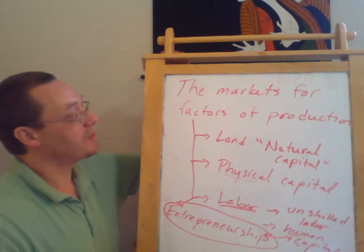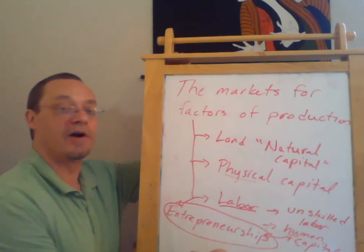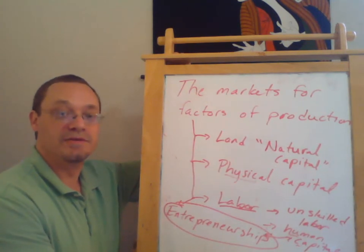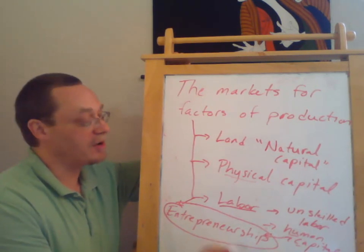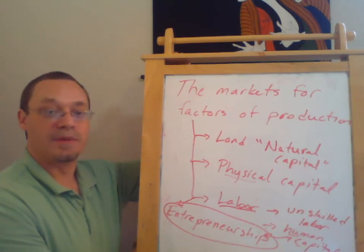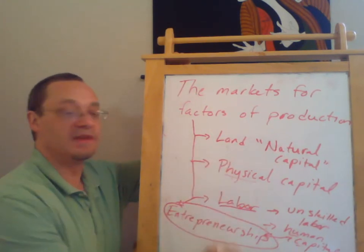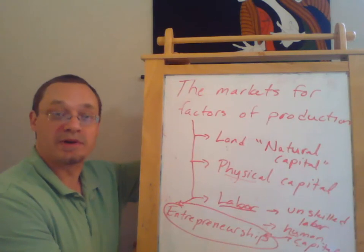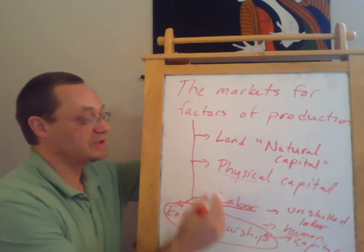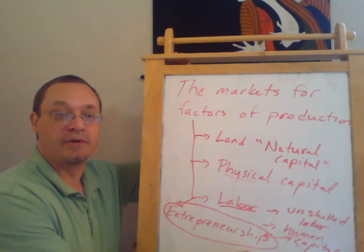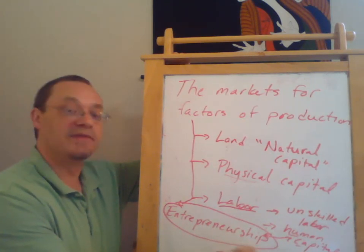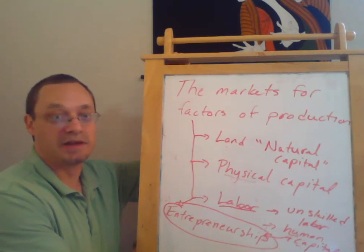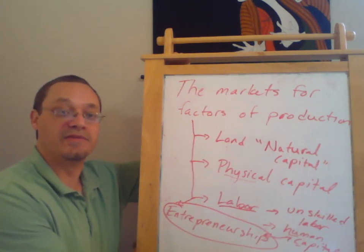The markets for factors of production are the market for all of these things that firms can use to produce goods and services which they can later sell. They're all going to depend upon the productivity of these different factors of production — the more productive a resource is, the more a firm is going to be willing to pay for it. That's the overarching theme, even though all of our examples will be oriented around labor supply and labor demand.